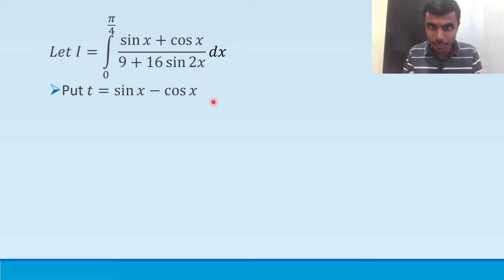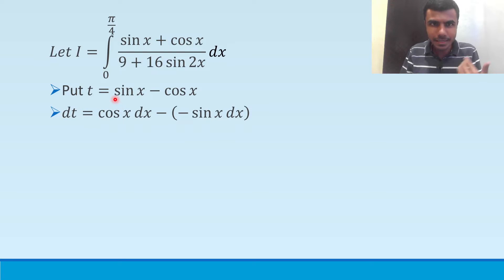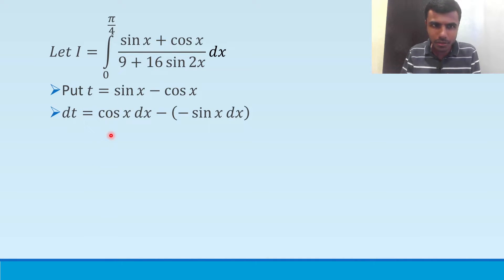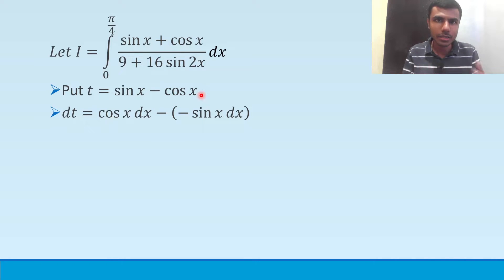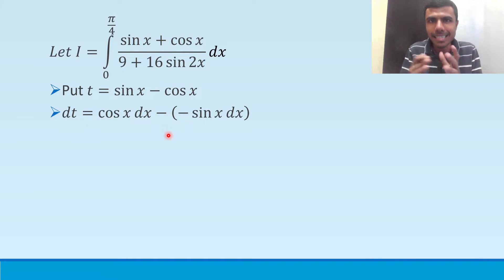If you want to know anything else please come in the comments box. Now just differentiate both sides of t = sin x minus cos x. Differentiating, dt = cos x dx minus (minus sin x) dx, which gives dt = (cos x + sin x) dx.